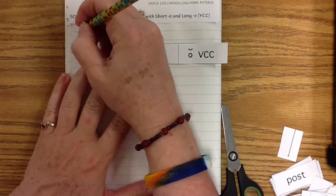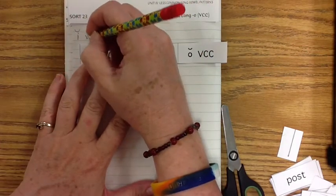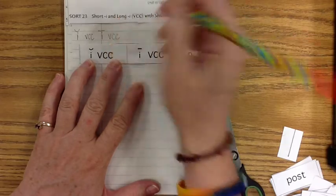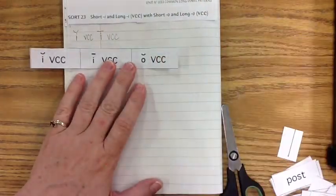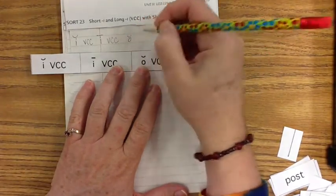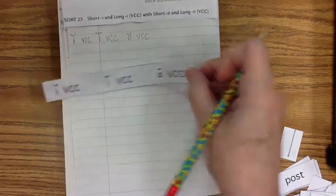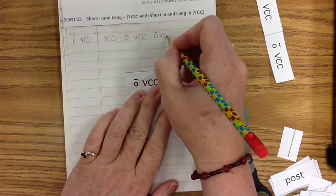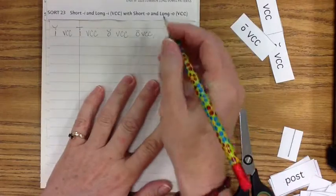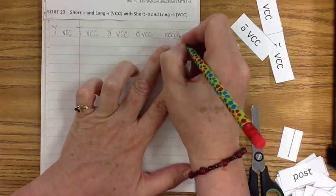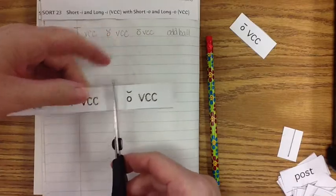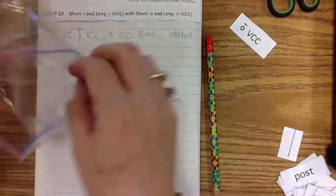We have the short I, which is a vowel-consonant-consonant pattern. Our long I — there's our symbol — for vowel-consonant-consonant. Our short O: vowel-consonant-consonant. Our long O: vowel-consonant-consonant. I'm leaving room for an oddball this week. Let me finish cutting my exemplars out, and then my spelling bag to use later on another spelling sort.